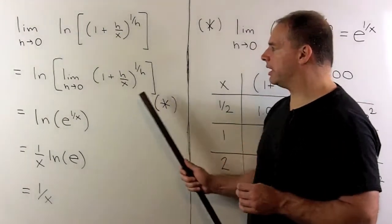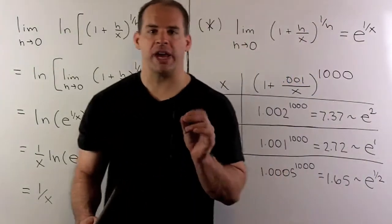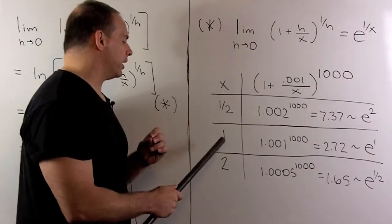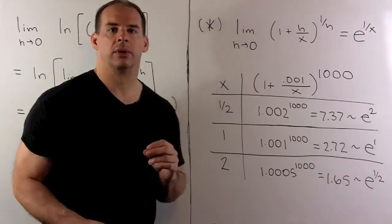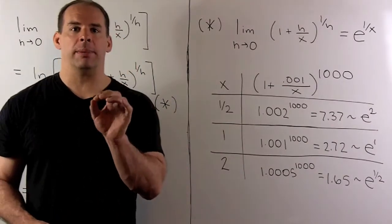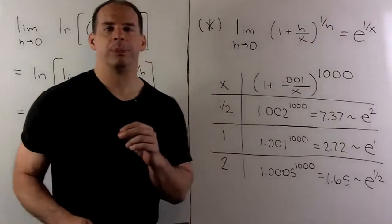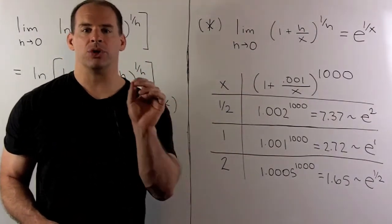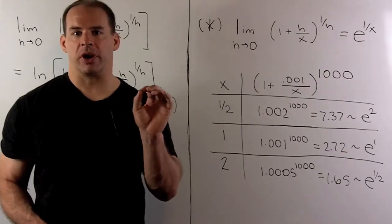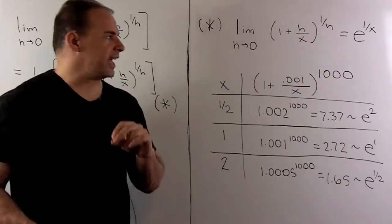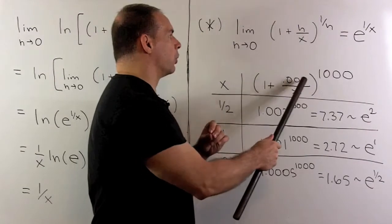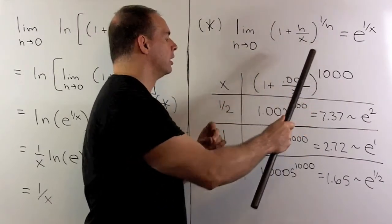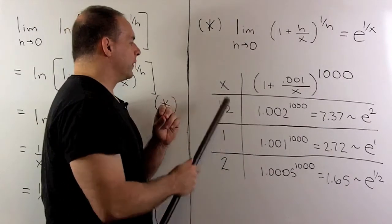Now, for this limit here, we'll just check it at a few points. So we'll use x equal to a half, 1, and 2. Now, if we're taking a limit, here we have h going to 0. So if I wanted to approximate the limit, knowing that it exists, we would just choose very small values for h. So I'm going to take h equal to 0.001 and put it into our expression here.